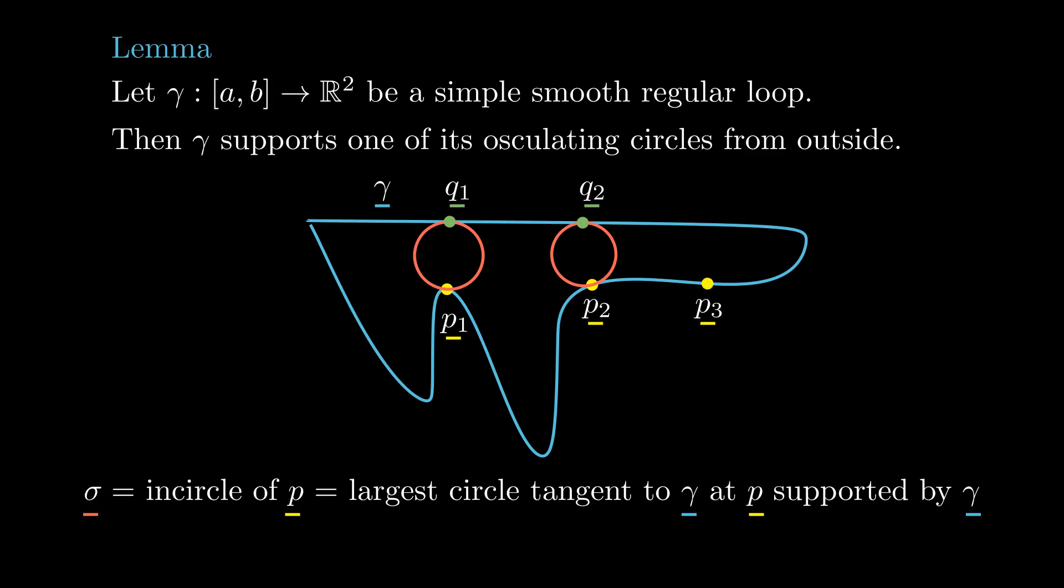Now choose p3 to be the midpoint of gamma2, which was the portion of gamma from p2 to q2, and repeat the construction inductively. Notice that the length of each arc is at most half of the length of the previous one, the length of gamma2 is half of the length of gamma1, the length of gamma3 is half of the length of gamma2, and so on.